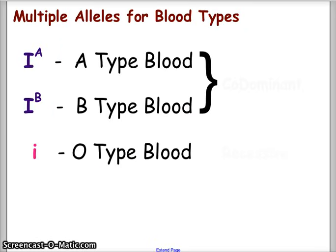Now let's get into the genetics of blood typing. This is a multiple allele situation, so we use superscript notation with the letter I — that's the universal notation for blood typing. I-superscript-A is the allele for A type blood, I-superscript-B is the allele for B type blood. O type blood is a recessive allele, represented by lowercase i.